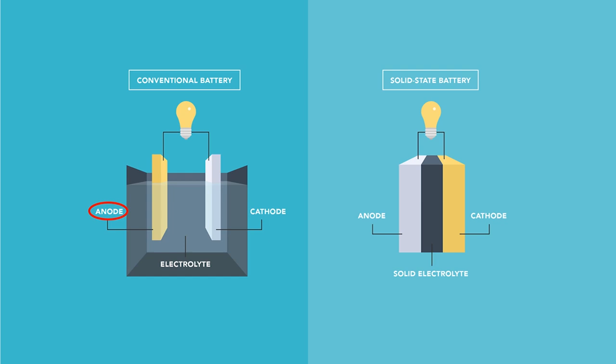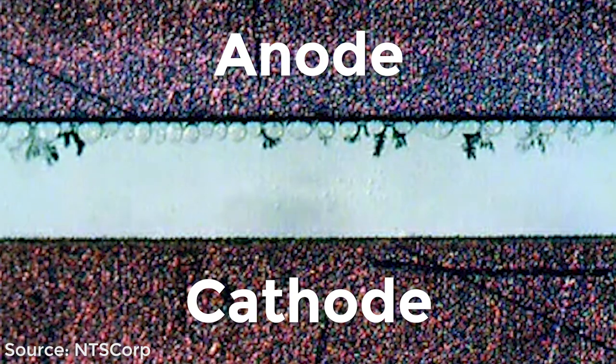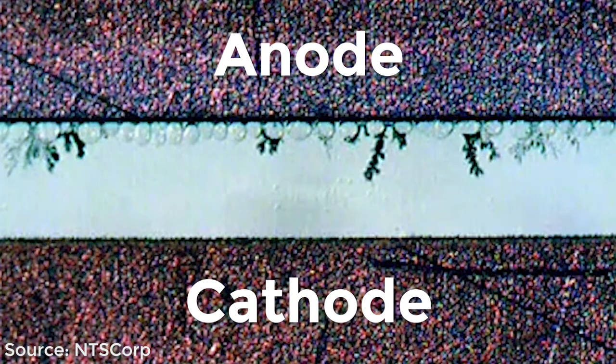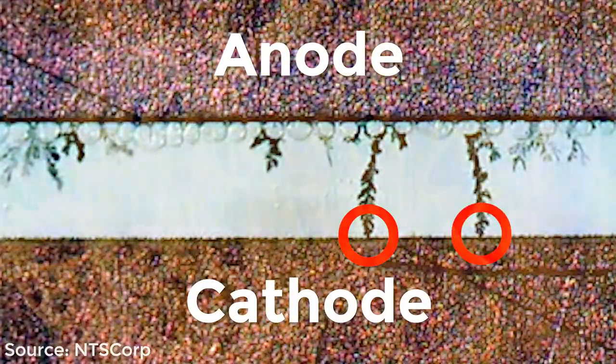So, why can't we use these lithium metal anodes with traditional liquid electrolytes? Well, due to uneven current distributions and chemicals within the liquid electrolytes, sharp lithium spikes, called dendrites, grow from the electrodes and can eventually short-circuit the battery, causing fires.